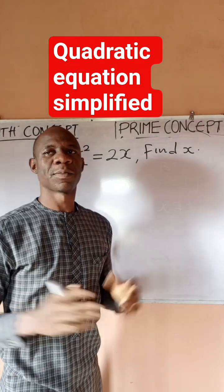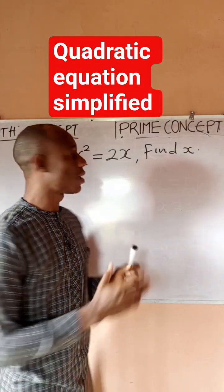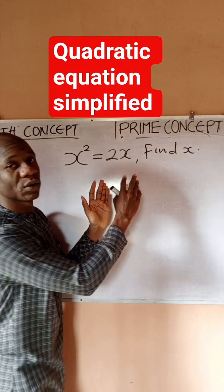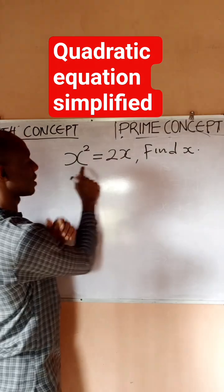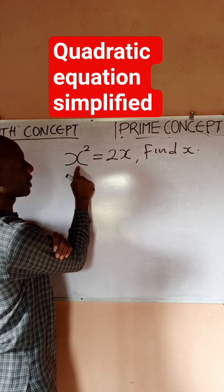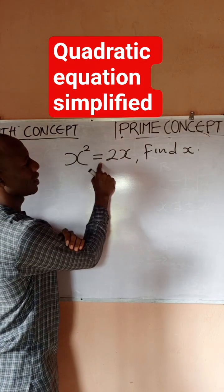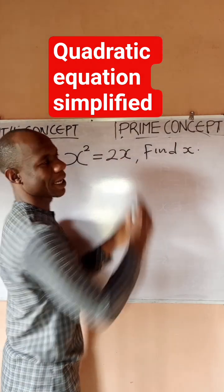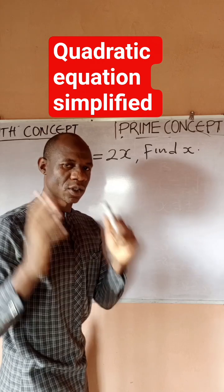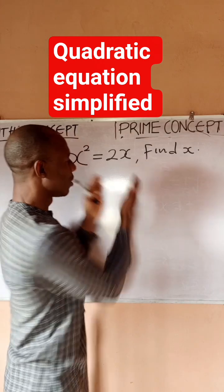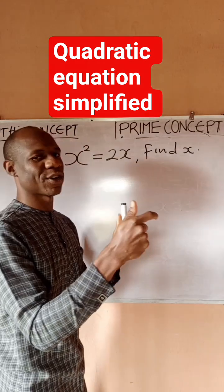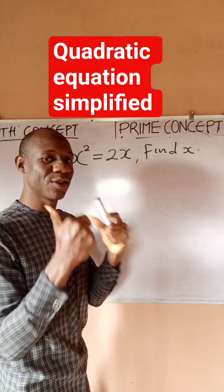Hello guys, this is Prime Concept. I have a problem under quadratic equations to look at, which says x squared equals 2x — find x. Some students may look at this and jump to a conclusion and lose one of the answers.